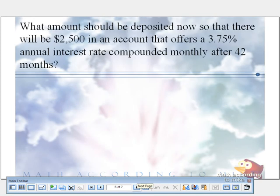What amount should be deposited now so that there will be $2,500 in an account that offers a 3.75% annual interest rate compounded monthly after 42 months?